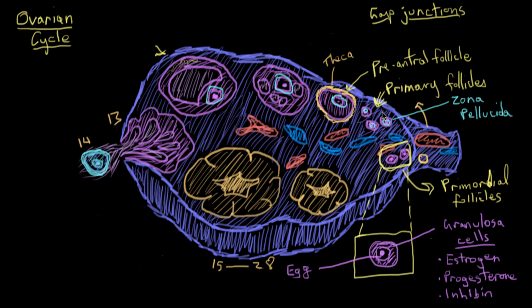Theca cells have receptors for luteinizing hormone from the anterior pituitary. And when luteinizing hormone, or LH, binds these theca cells, they produce a hormone called androstenedione. And when the thecas get androstenedione, they give it to the granulosa cells, who then convert it to estrogen and release it into the blood. So the blood estrogen levels start to go up at this point.